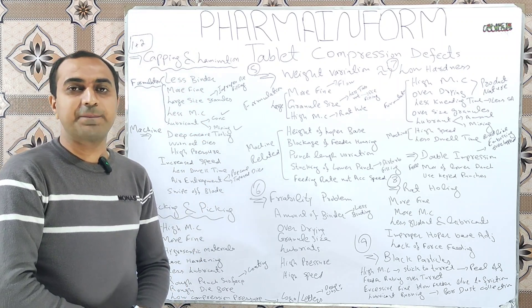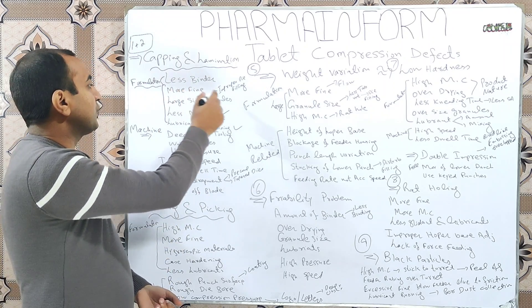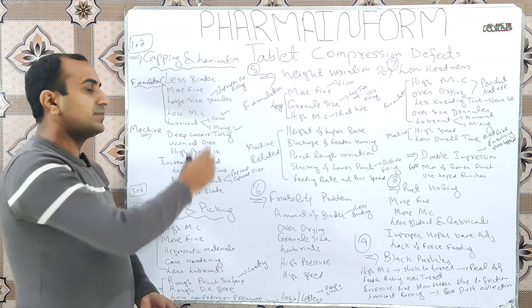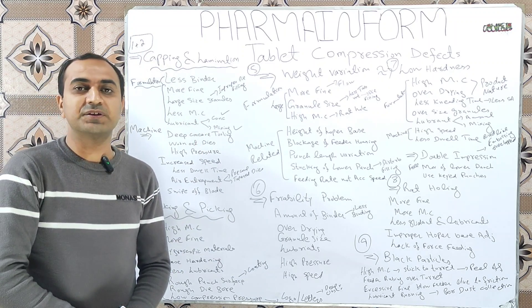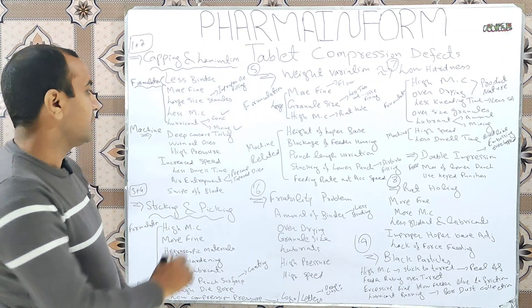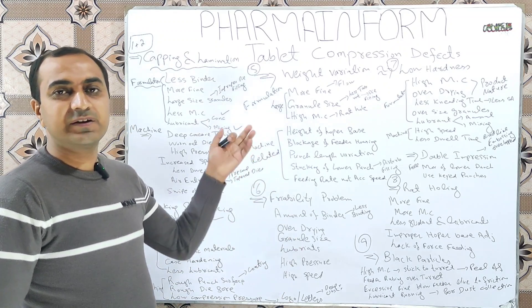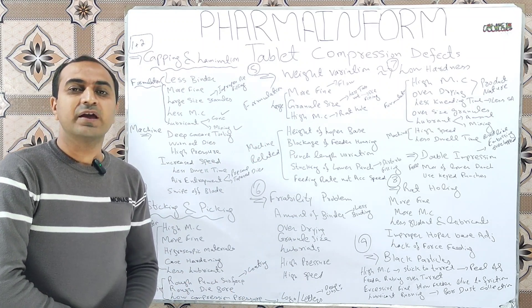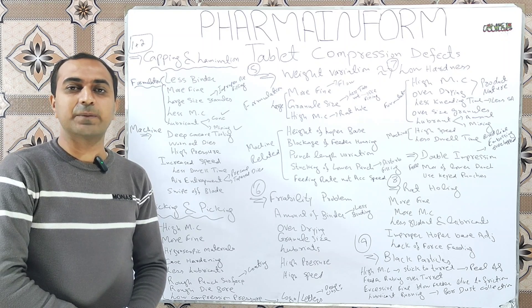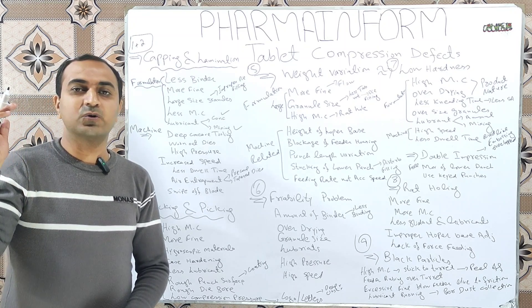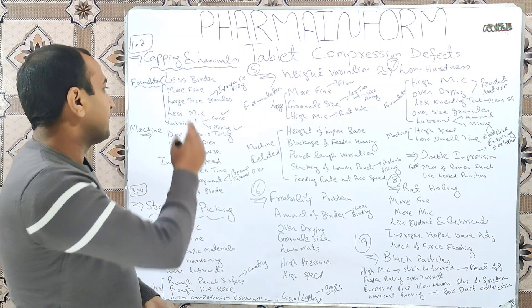To summarize, formulation-related issues that can result in tablet capping and lamination are: less binder, excess fines, large granule size, less moisture content, and high lubricant concentration or long mixing time. Now for machine-related issues: if you are using deep concave shape punches it will result in tablet capping, so try to avoid deep concave punches.